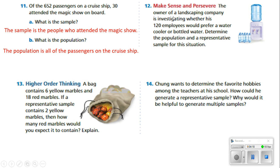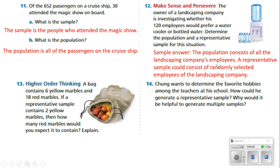Number 12: the owner of a landscaping company is investigating whether his 120 employees would prefer a water cooler or a water bottle. Determine the population and representative sample of this situation. The population consists of all the landscaping company's employees. A representative sample could consist of randomly selecting employees — for example, putting all the company names on a list and placing a check mark next to every fourth person; those people would be the sample selected.